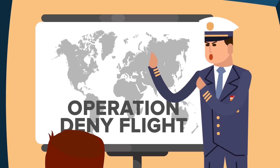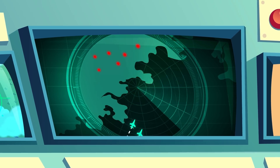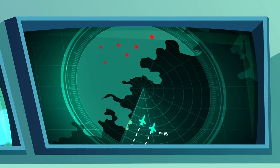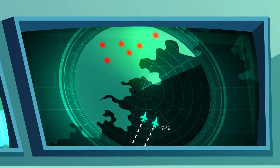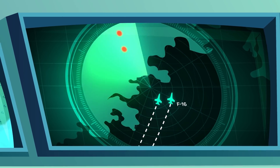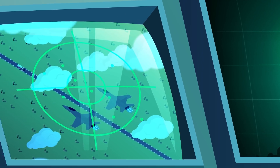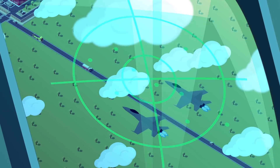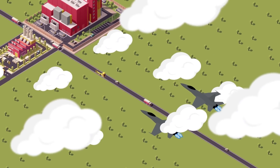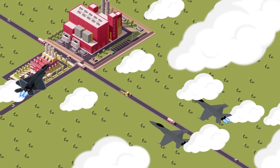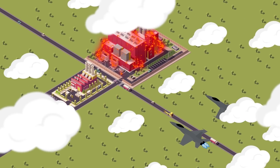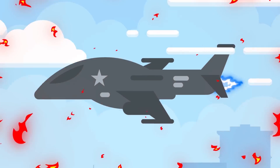In February 1994, two American F-16s detected a flight of six unidentified radar contacts inside the no-fly zone. Two other F-16s were vectored in on the unknown contacts to discover six Bosnian J-21s and two J-22s bombing a military factory at Novi Travnik.